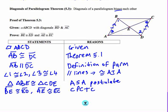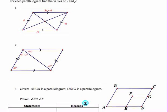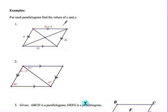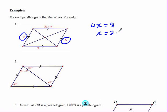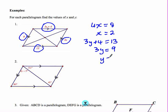We move on to application problems using theorems 5.1, 5.2, and 5.3. Given parallelograms, we find the values of x and y by setting up equations using the properties of parallelograms. For the first problem: 4x = 8 because those are opposite sides of a parallelogram, giving x = 2. Similarly, 3y + 4 = 13 for the same reason, and we solve for y.